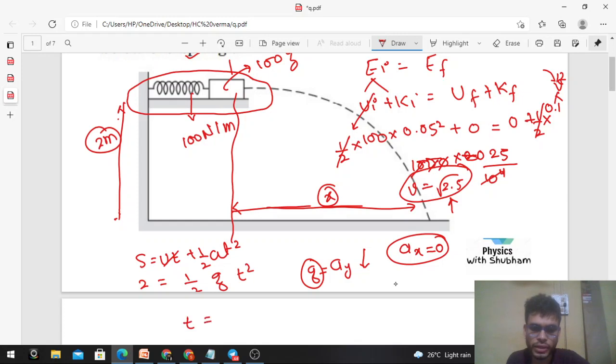From here you will get the time of flight which is square root of 4 by g - 4 upon 9.8 under root. So you can find out the value of time of flight.